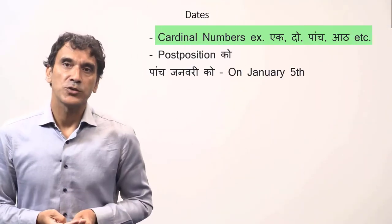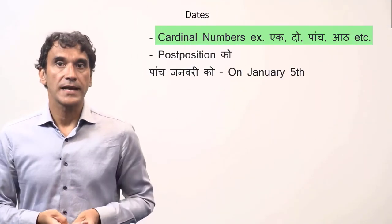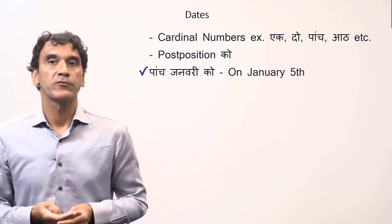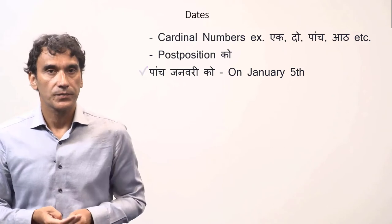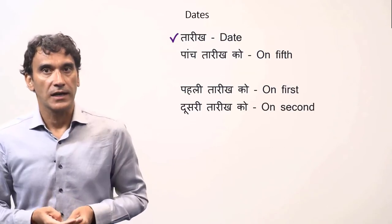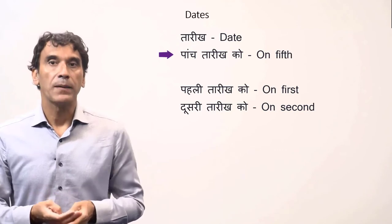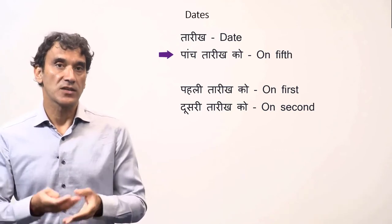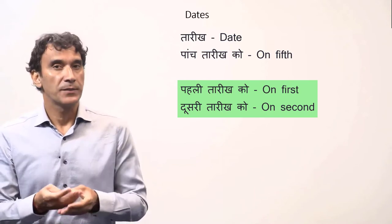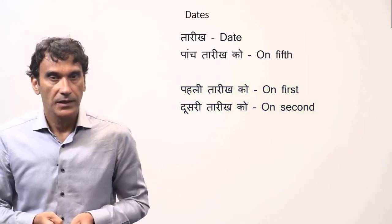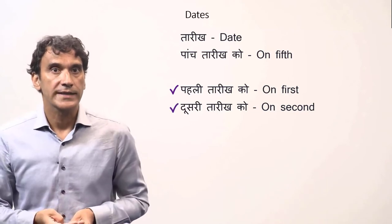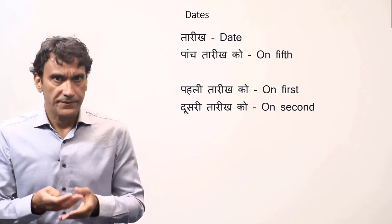For dates, Hindi uses cardinal numbers — the basic numbers — and dates take the postposition 'ko'. So 'on January 5th' would be 'panch january ko'. The word 'tarik', meaning 'date', is often used after the number. For example, 'panch tarik ko' means 'on the fifth'. Sometimes for the first and second day of the month, ordinal numbers are used: 'pehli tarik ko' (on the first), 'dusri tarik ko' (on the second). The word 'tarik' is feminine, which is why the ordinal numbers for first and second are in feminine form.